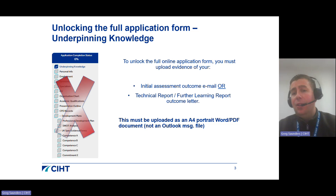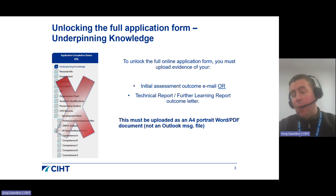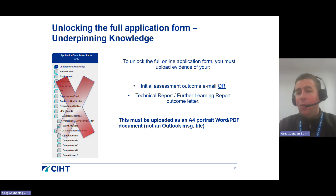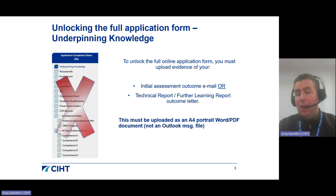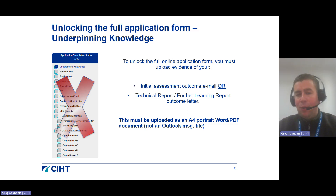Either way, this document needs to be uploaded as an A4 portrait Word or PDF document. Therefore if you are uploading your initial assessment outcome email, please do convert it to a PDF file before uploading it to the system. The system might let you upload an Outlook file for this section and allow you to proceed to the rest of the form, but you will encounter a technical issue later on when you're trying to submit your application.